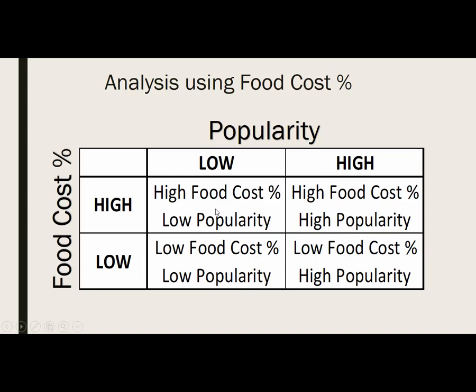An item with higher than average food cost percentage and lower than average popularity needs to be kept an eye on, or possibly removed or reinvented. An item with high food cost but high popularity may be doing well, but you need to figure out how to lower that food cost percentage. Two ways: lower your costs or increase your selling price. You have to be careful — lowering costs may mean reducing portion size or using less costly ingredients, reducing value. Increasing price can affect popularity.